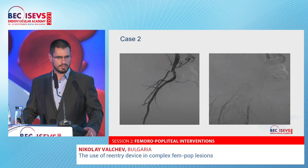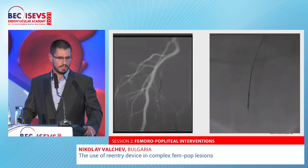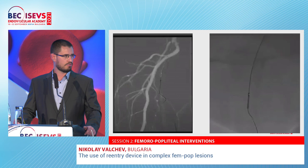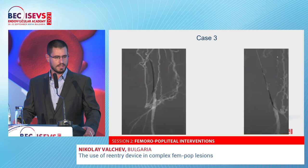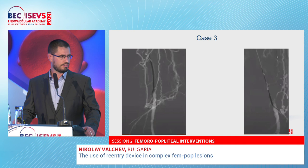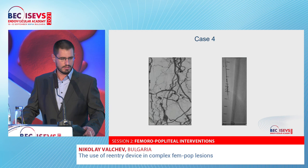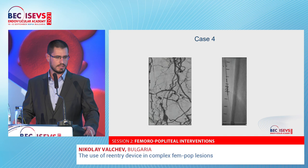Here we see a flush occlusion of the SFA where, despite significant effort, returning to the true lumen is very difficult. By using the re-entry device, a lot of time can be saved compared to going retrograde or performing other techniques. In another case, the distal cap configuration indicates that antegrade re-entry would be extremely difficult, so the retrograde approach is preferred — but the re-entry device again saves considerable effort and time. Here, the distal SFA or proximal popliteal artery shows heavy disease with calcium and plaques, making return to the true lumen seem nearly impossible — re-entry device makes the procedure much easier.